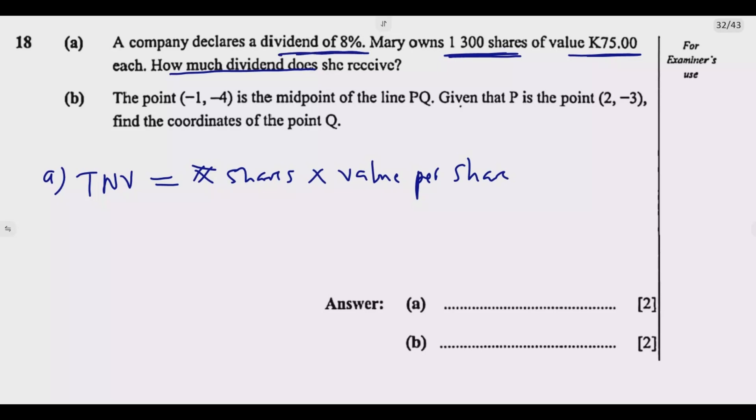Then once we find this, we need to find 8% of this. That will be step 2. 8% of this is the dividend that Mary received. So we have 1,300 times 75 kwacha. The easiest way to find this value is we divide 1,300 into two parts. We're going to have 1,000 times 75.